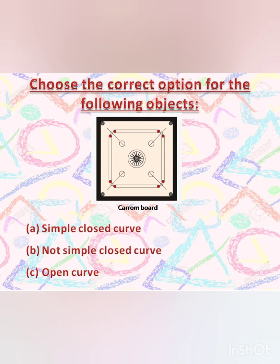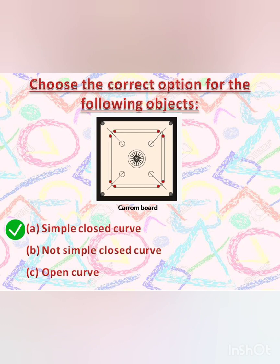Now let's have a look at the other example. The shape of a carom board — is it a simple closed curve, not simple closed curve, or open curve? Yes, it is a simple closed curve. None of its boundaries intersect each other. Now tell me which kind of curve does a spring have? The answer is open curve, as the start and the end point of a spring are different.